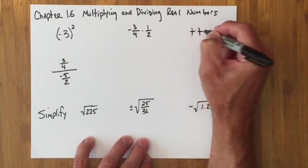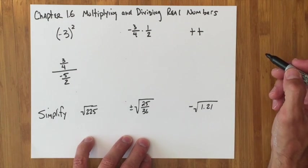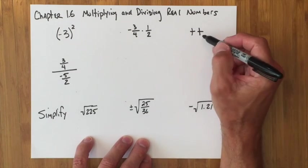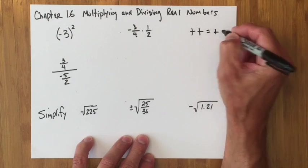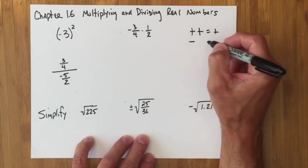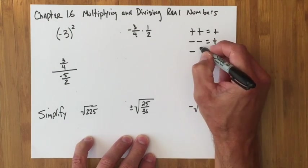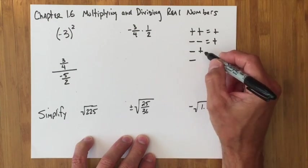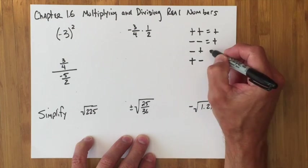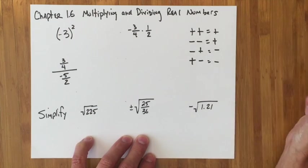You might recall that if the symbols are the same, those are my dogs and their collars, positive times a positive is a positive, same thing with division, negative times a negative or negative divided by a negative is a positive. And if they're different, either with the negative sign first or the negative sign second, if they're different, then you get a negative.